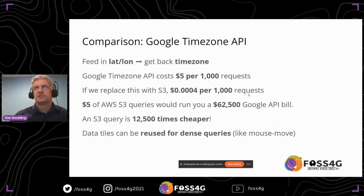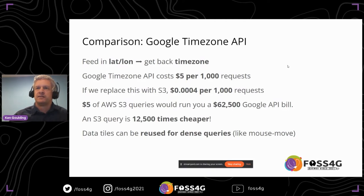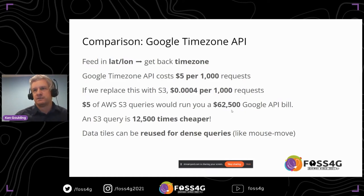Another comparison: in terms of querying with data tiles, I just replaced the Google Time Zone API with data tile requests. The Google API is $5 per thousand requests, which adds up quickly if you have thousands of users doing real-time interactive queries. The equivalent cost of querying a tile from S3 means that $5 of S3 queries would replace a $62,000 Google API bill. It's a lot cheaper to query tiles from something like S3 or any static hosting. And if you're doing mouseover queries, you're not requesting a tile for every pixel — you're requesting 65,000 pixels at a time.